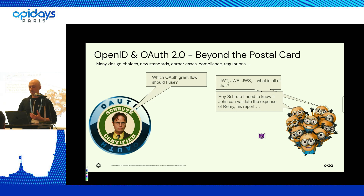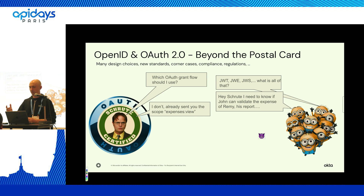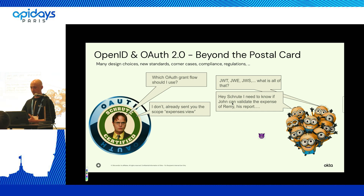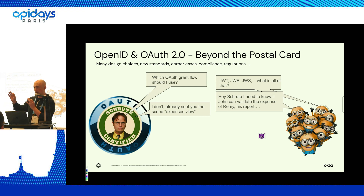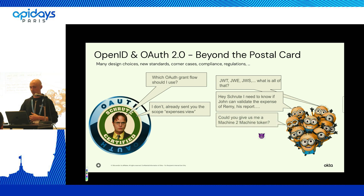APIs may need more than just a classic token to get data back. They want more information — for instance, John being able to access the expenses of Remy. But for that, they need more authorizations, more information about permissions. An authorization server only does basic scope, such as 'you can view expenses,' 'you can read.' But they don't give precise information about what permissions you really have on the app, because that's not their role.